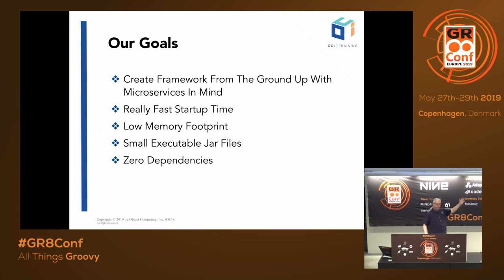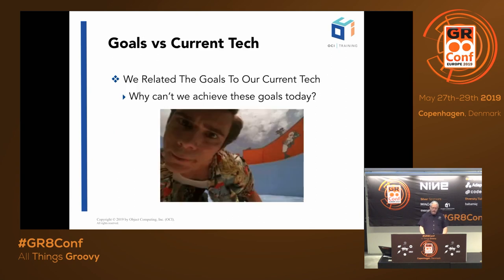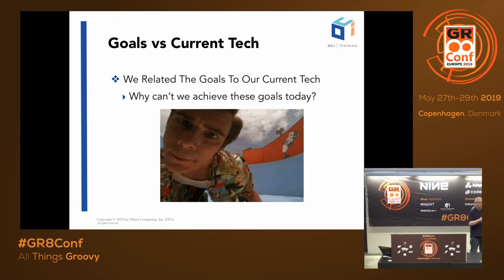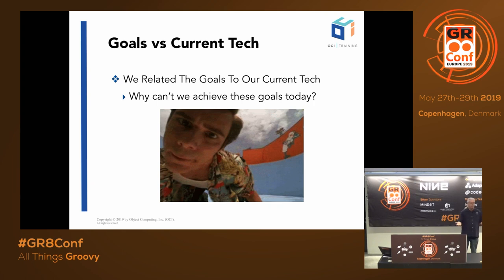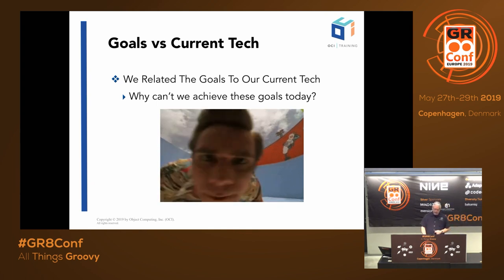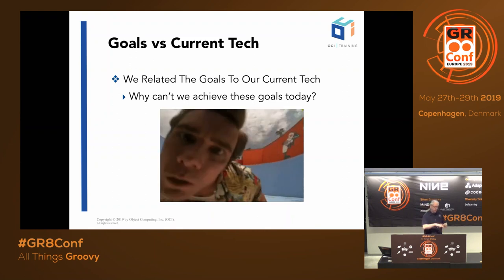So we came up with a list of goals: really fast startup time, small memory footprints, minimal dependencies, small executable JAR files — and the list is long. One of the next things we had to do was relate that list of goals to our current technology and let that understanding affect our decisions about how to move forward. We had to go down this list and ask questions like: why can't I start a Grails application in 700 milliseconds? Why can't I run a Grails application in 10 megabytes of heap? What is it about our current technology that keeps us from satisfying these goals?